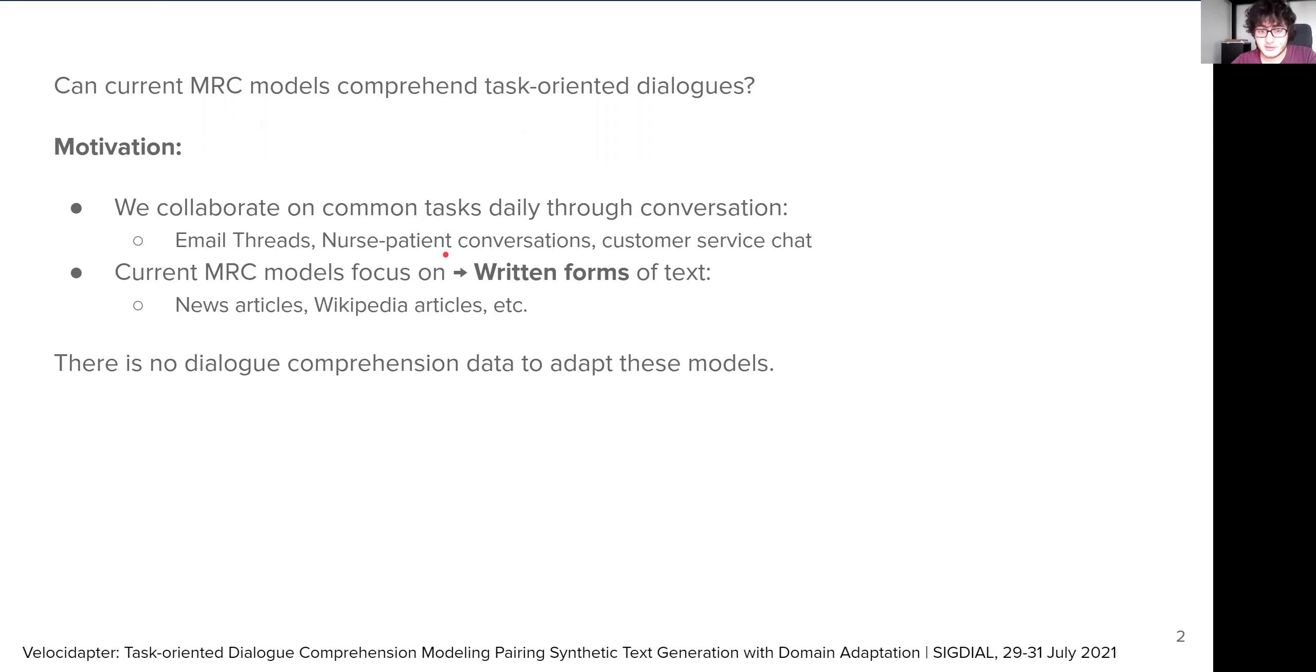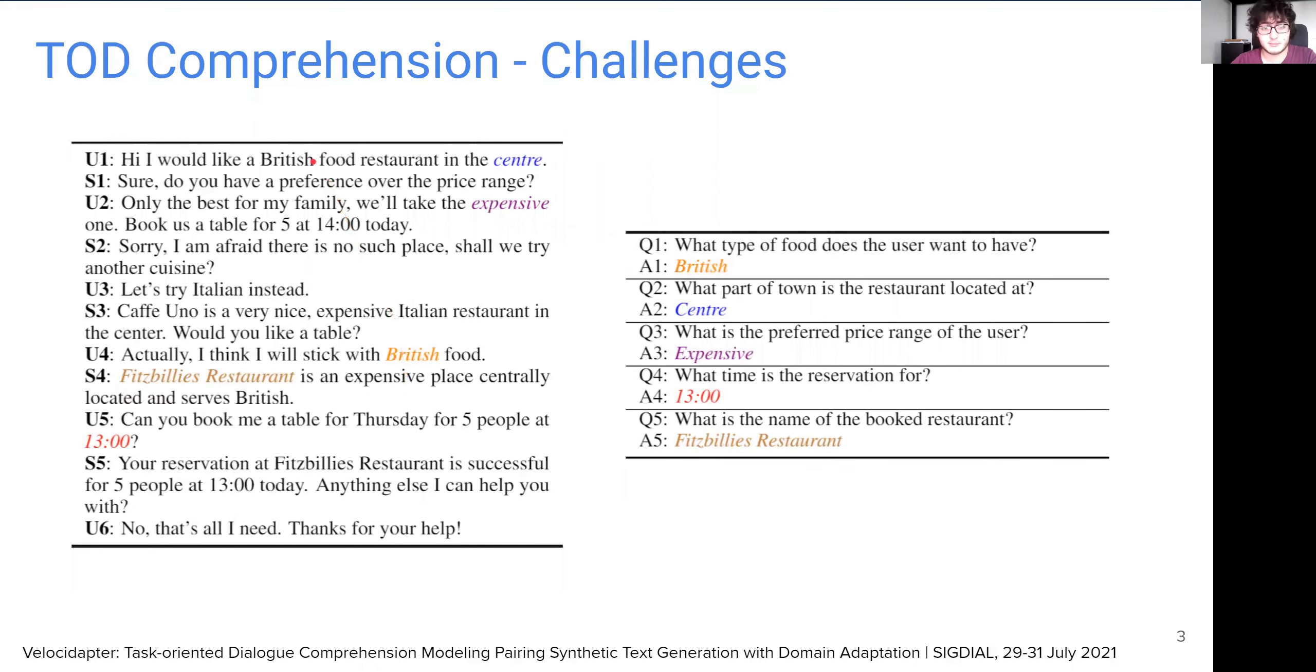This is where the initial gist of our framework comes into stage. We use an existing dialogue state tracking dataset and annotate each slot with a few questions to end up with a dialogue comprehension dataset. Let me show you an example.